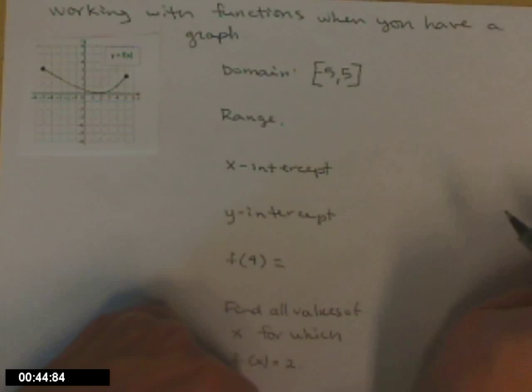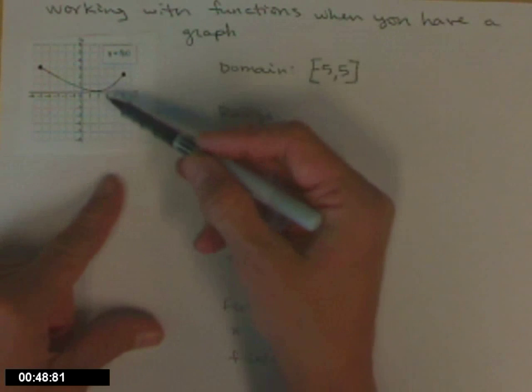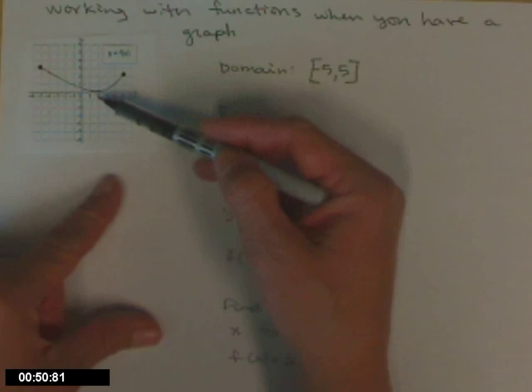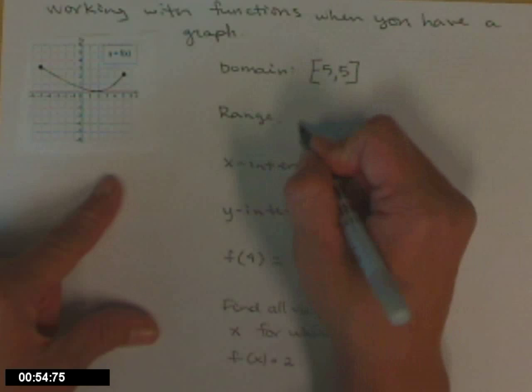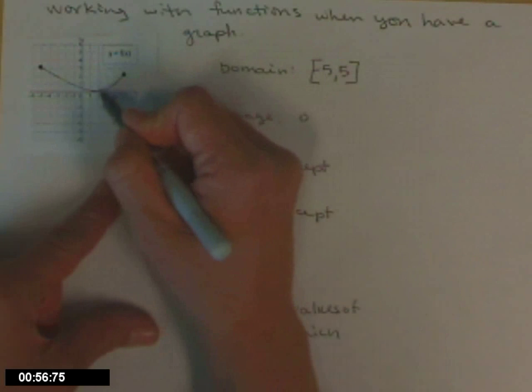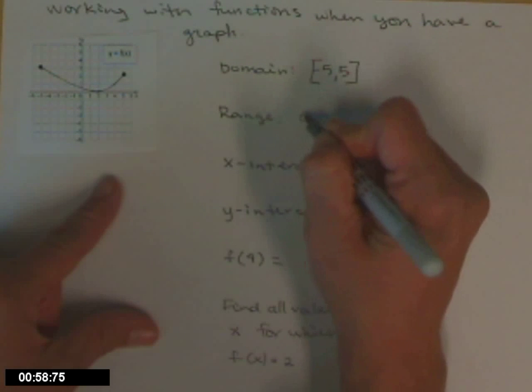The range is a set of y values. For what y values does my graph exist? So it never comes down below the x-axis, so all my y's are positive. So it looks like 0 is my lowest, and for argument's sake, we'll assume we touch there, so 0 is included.